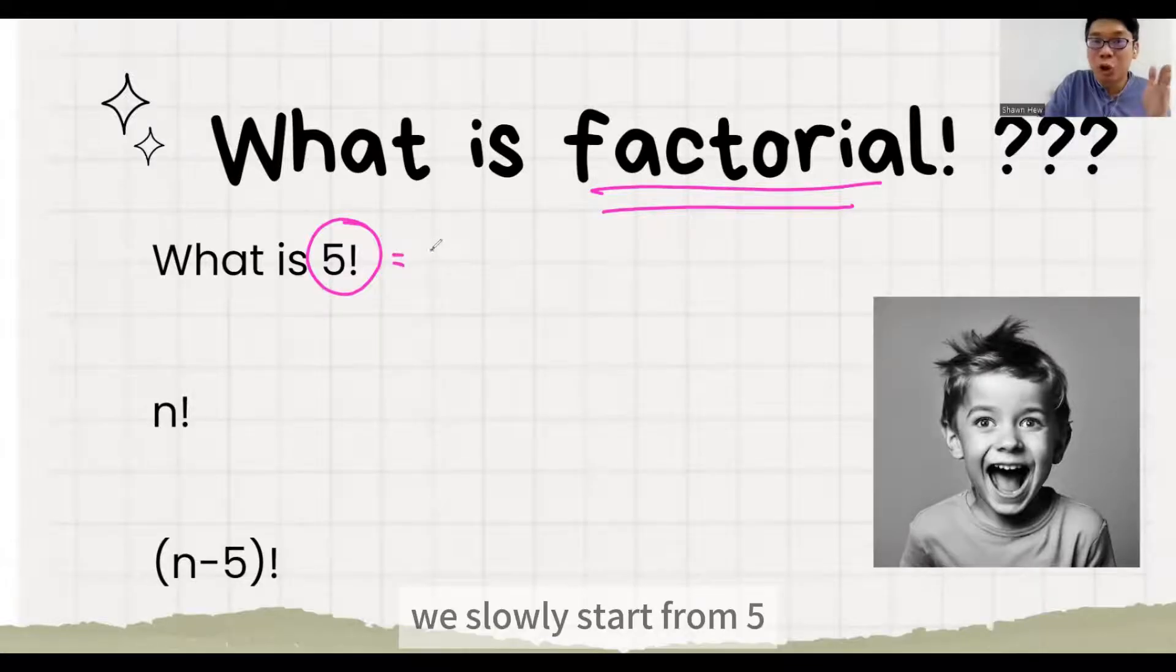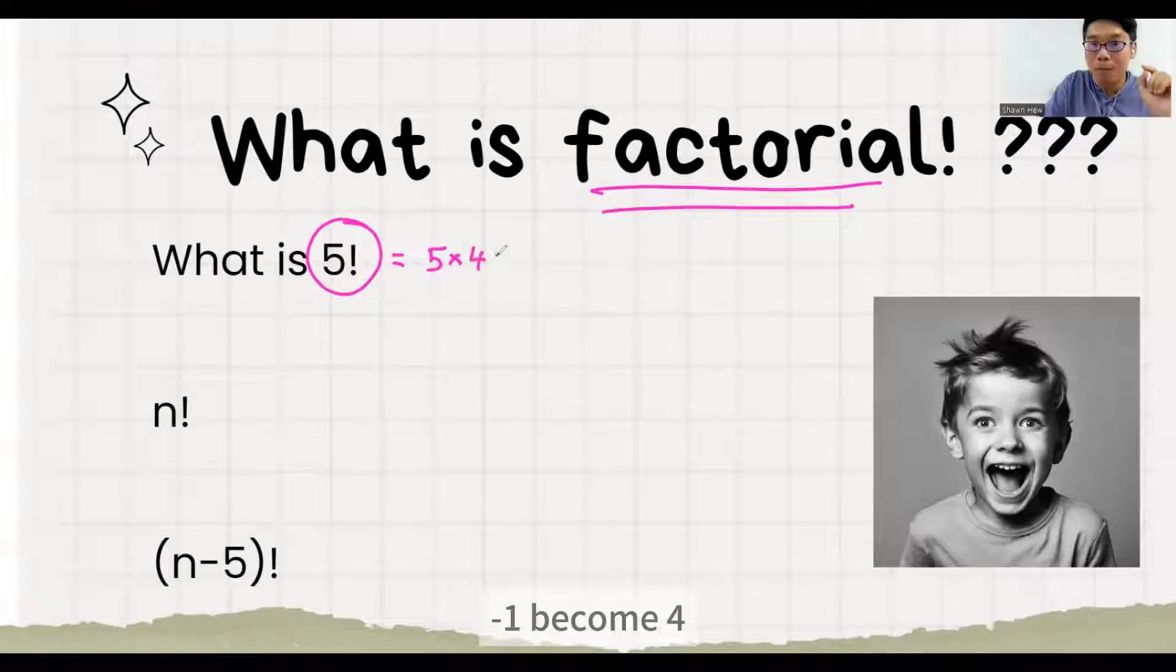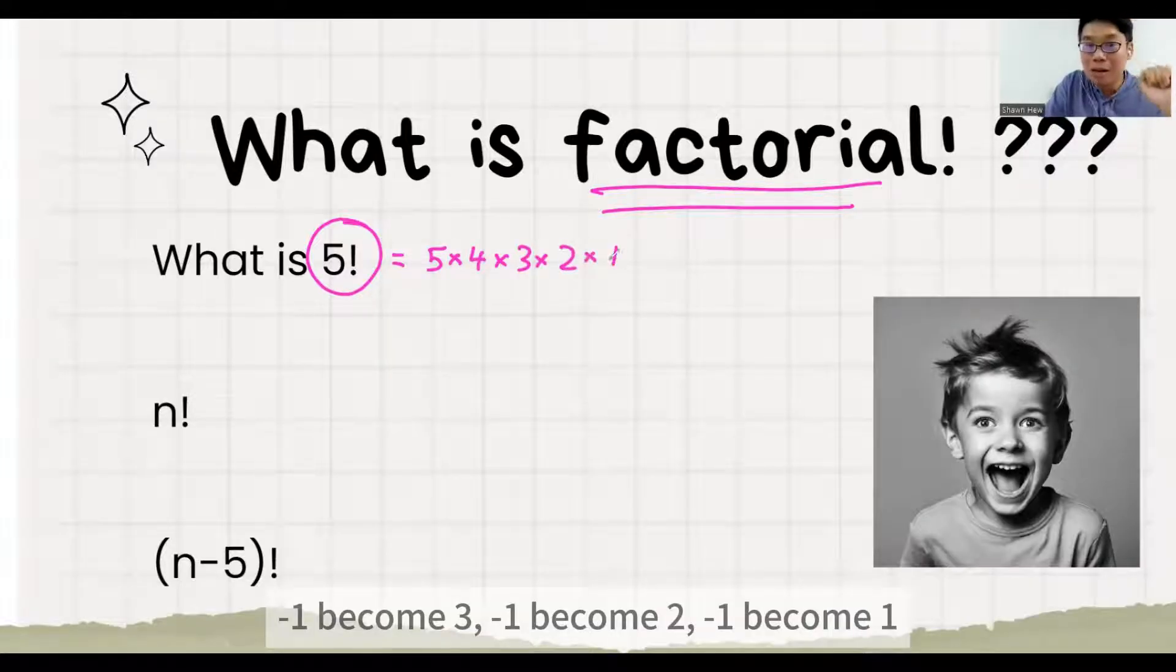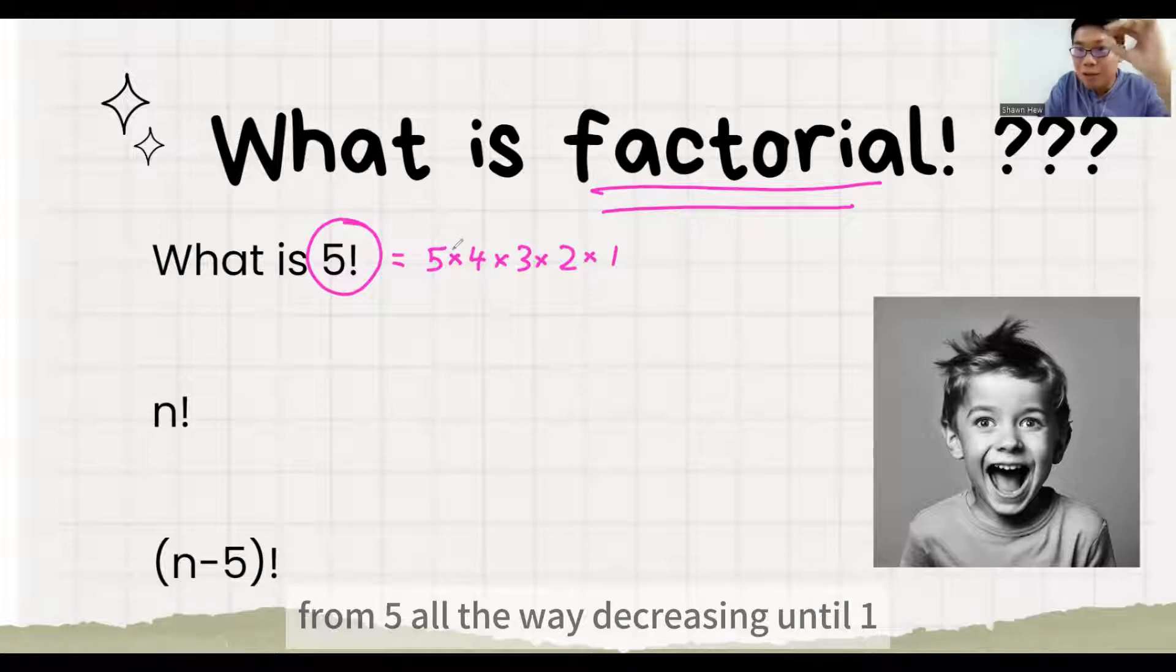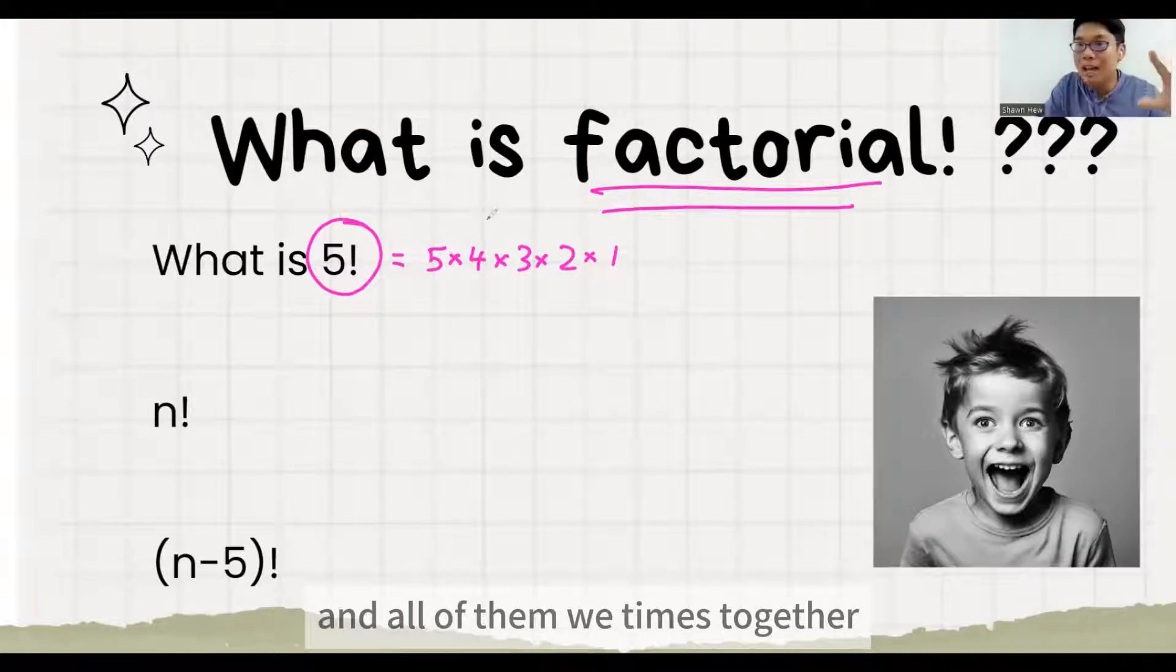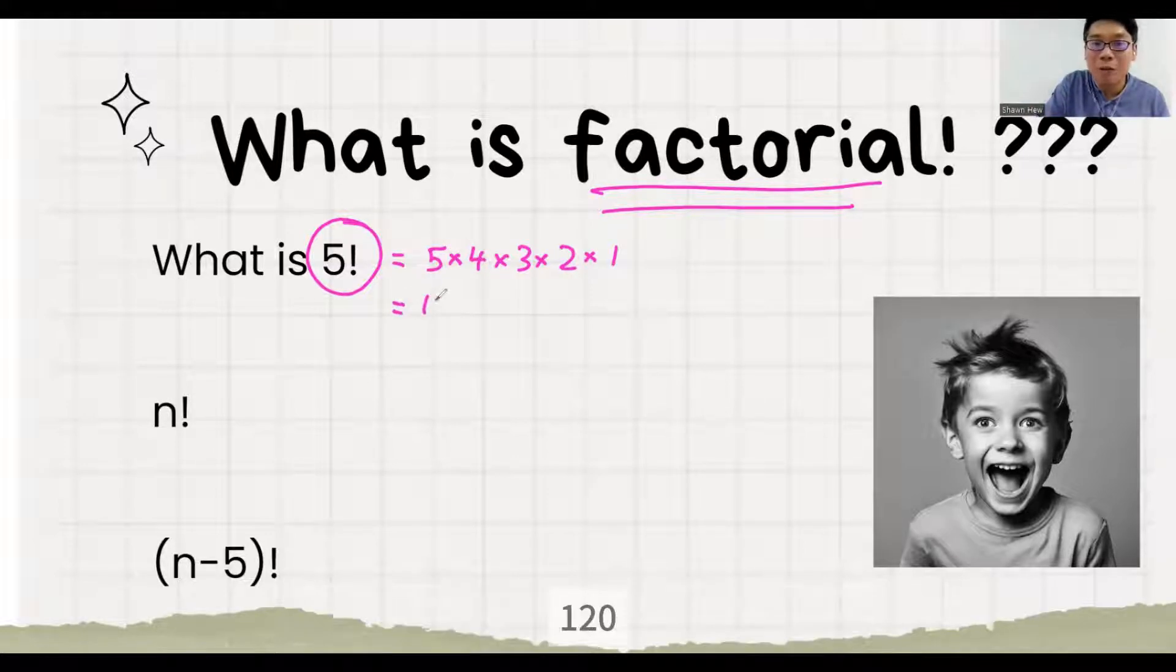It means we slowly start from 5, minus 1 become 4, minus 1 become 3, minus 1 become 2, minus 1 become 1. From 5 all the way decreasing until 1, and all of them we times them together: 120.